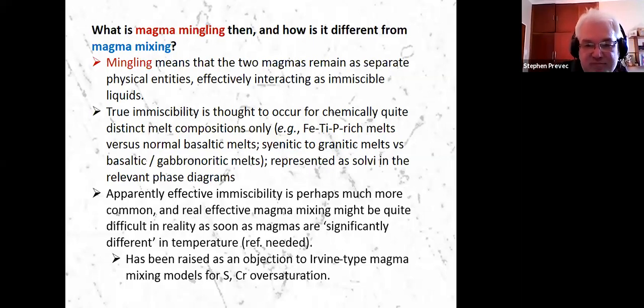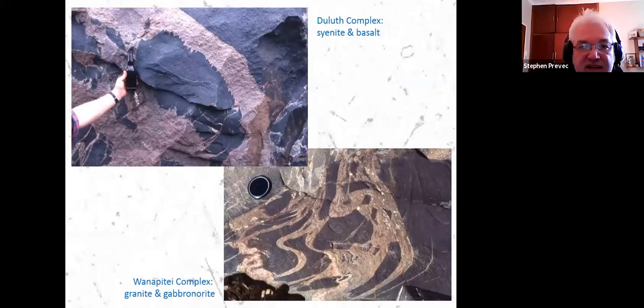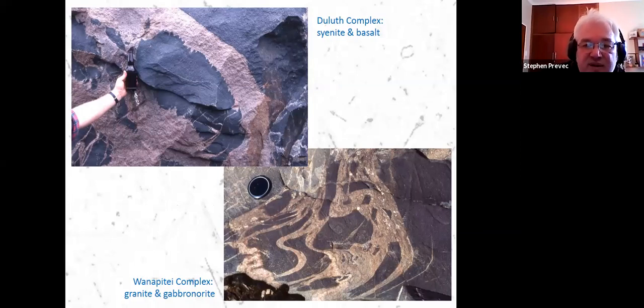But the reading I've been doing lately where even very felsic melts where there's a big viscosity contrast with mafic melts suggests that homogenization in these environments is probably quite practical. So here's a couple of examples of immiscible, proper immiscible behavior. And the picture on the top left is from the Duluth complex at the base of the complex. And this is in the mid continent rift in the north in the central United States on the northwest shore of Lake Superior.